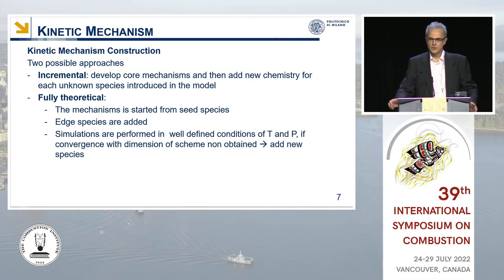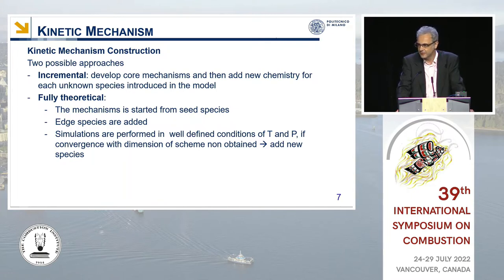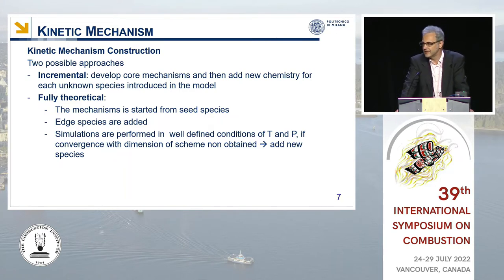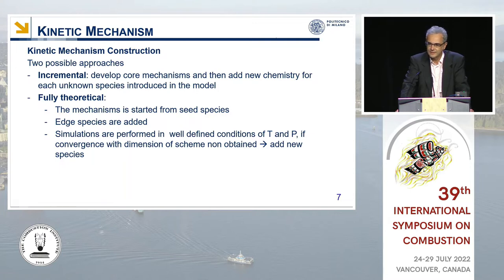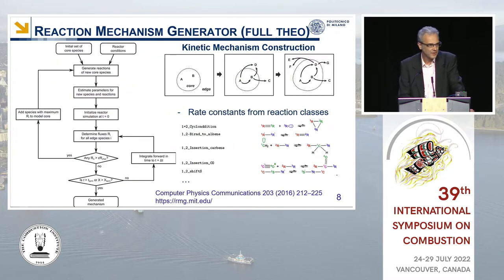How can we do kinetic mechanism generation? I've listed two possible approaches. The first is what I call the incremental approach: we have a core mechanism for which we've developed rate constants at a high level of theory for all reactions, then we add new chemistry for each unknown species we want to include. The second — maybe the dream — is to go fully theoretically, creating the mechanism from seed species without starting from available knowledge, built ad hoc for each temperature and pressure condition.